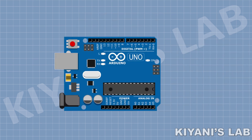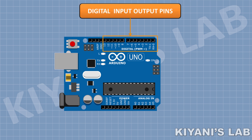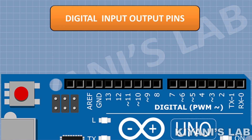Arduino Uno is the most popular Arduino board and this is the board we are going to use in this series. Arduino Uno has 14 digital I/O pins. These pins can be set as input or output. The pins 0 and 1 are serial communication pins and used for programming the Arduino, so mostly we don't use those pins.